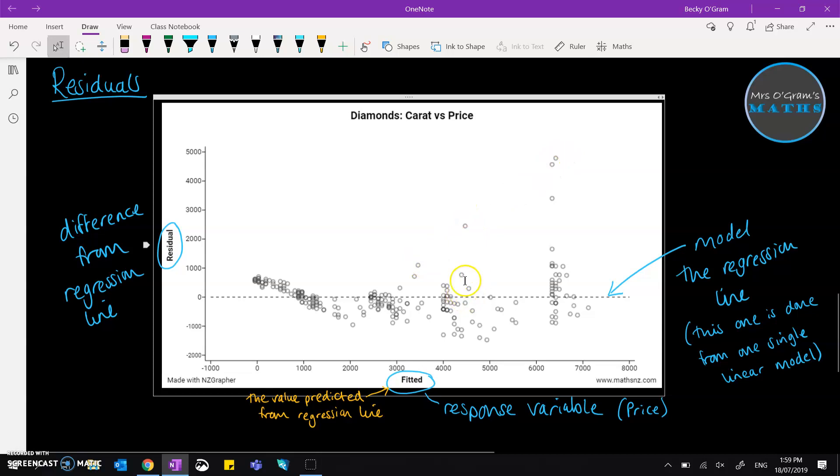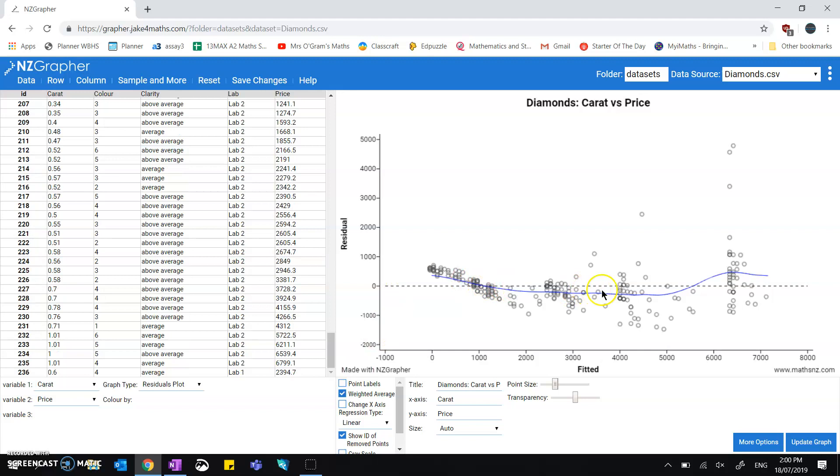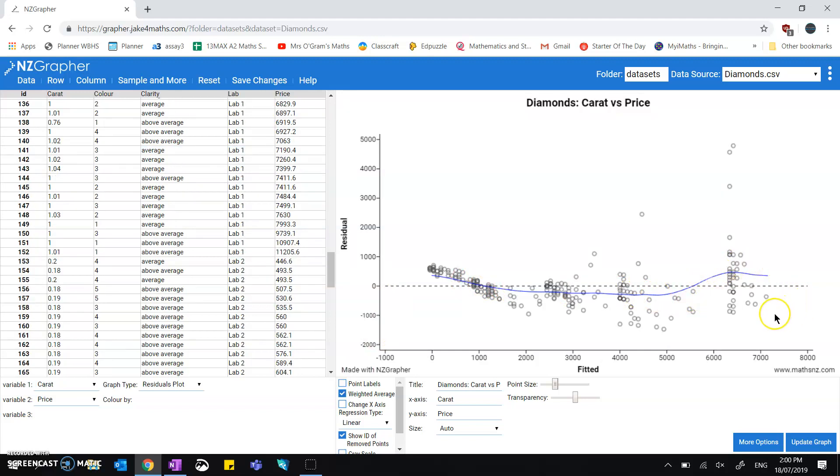If you pop back to NZ Grapher, you can click on this thing down here called weighted average. That gives you a line of the weighted averages through that data and you can see roughly where it goes. You'd want to include this graph into your project if you're going to talk about residuals.